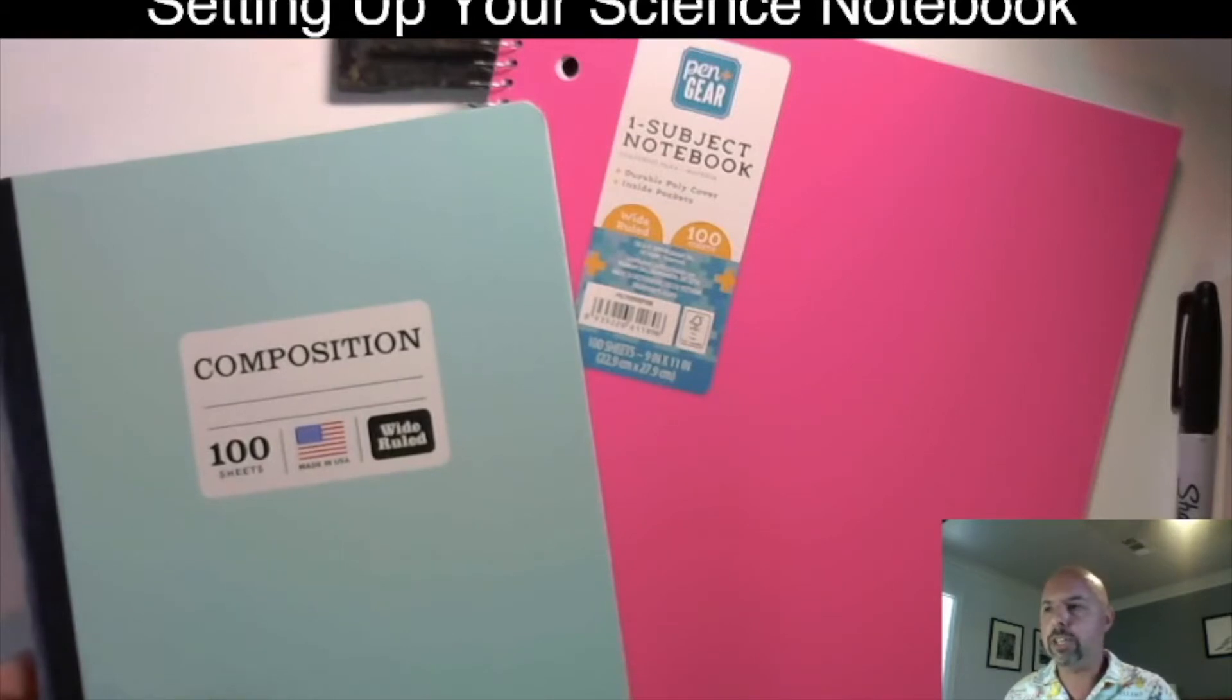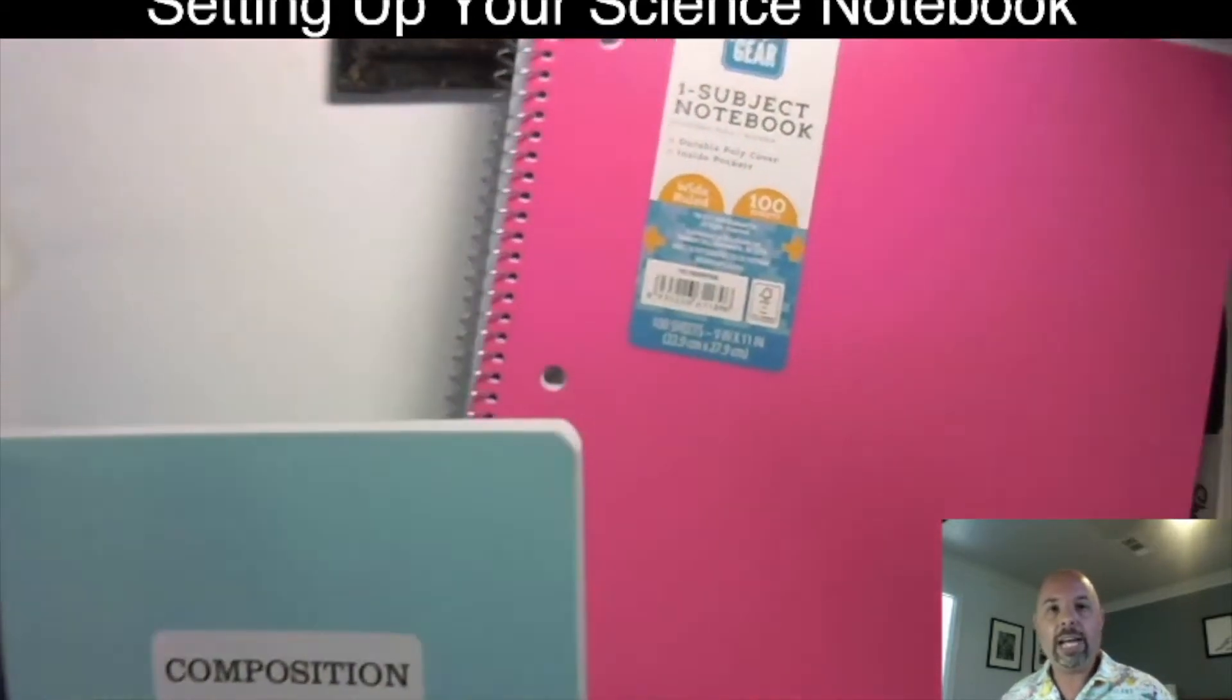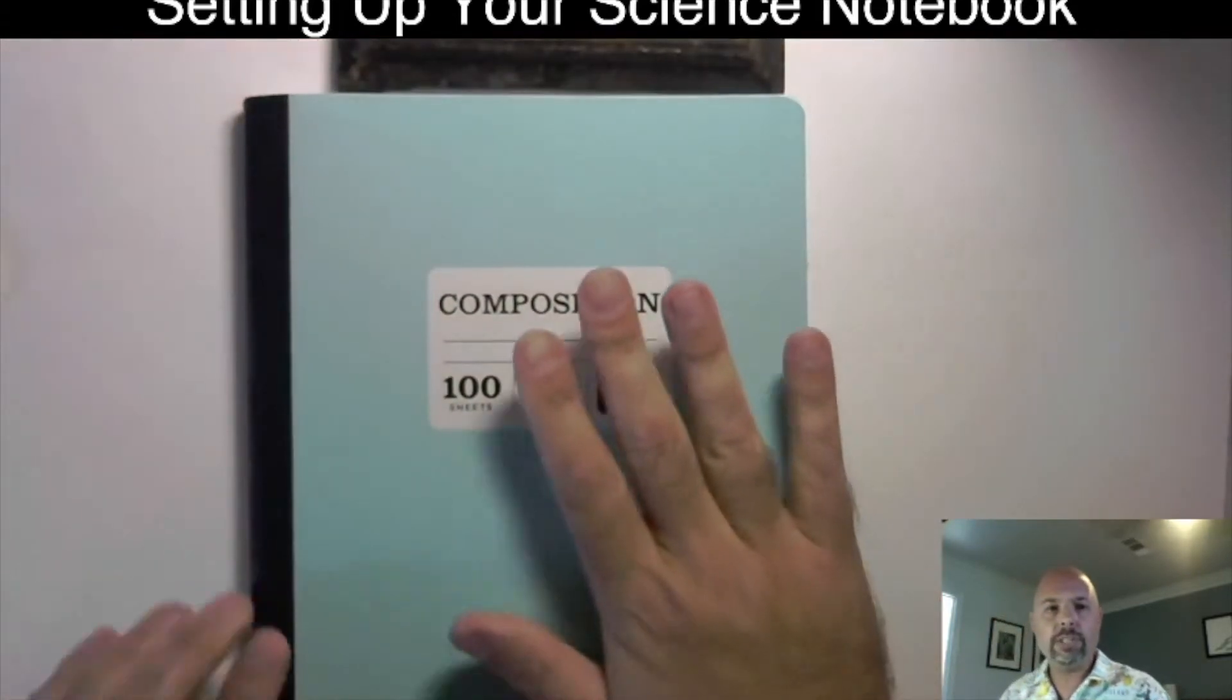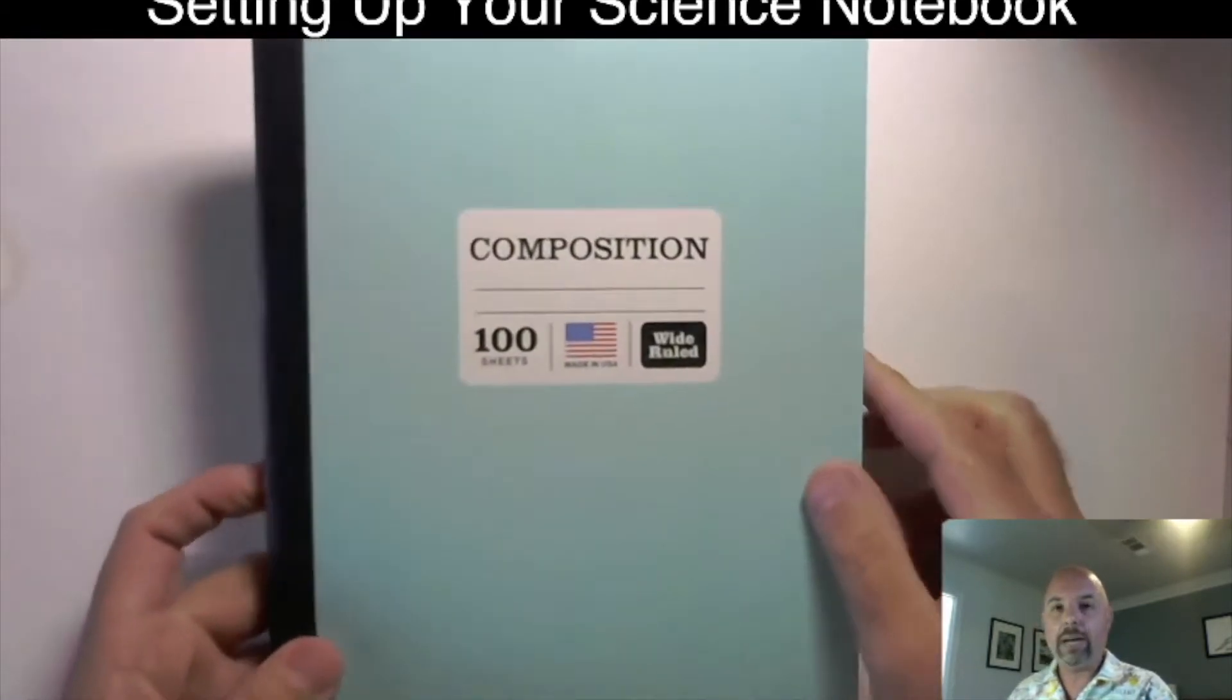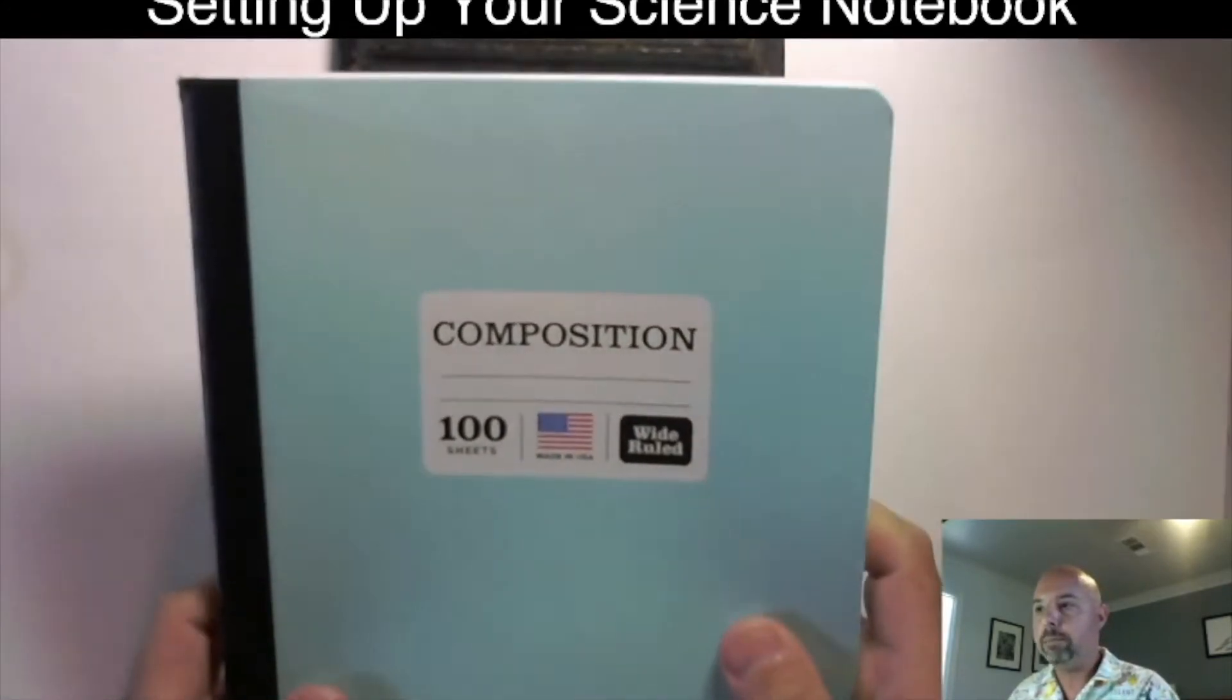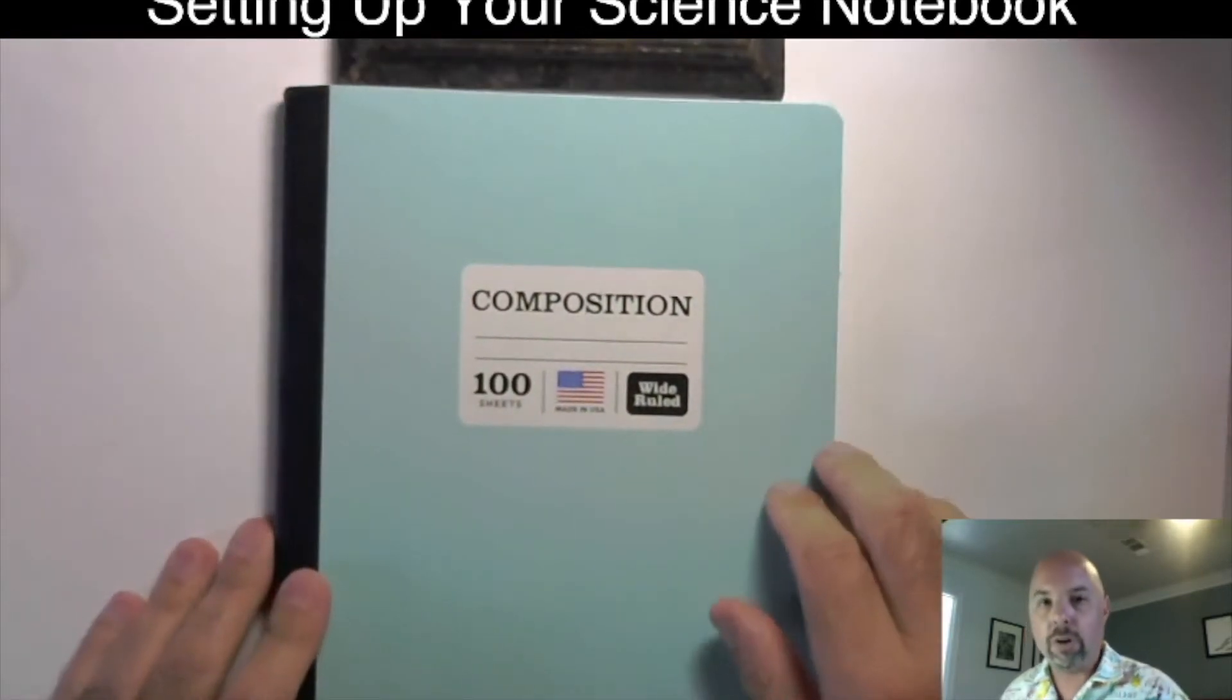100 sheets should be really good for the amount of stuff that we're going to be doing. So, again, composition book is fine. A spiral notebook is fine. I'm a big fan of composition books. I think that they're just super cool looking. They're rugged, they're sturdy. Not that a spiral notebook isn't rugged or sturdy, but I think that they are just great to use for all purposes.